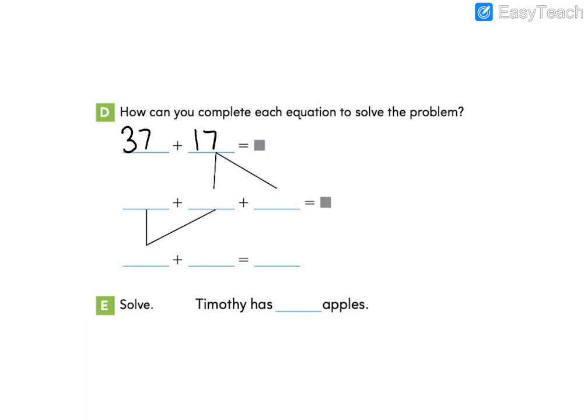So then we'll complete our equation. 37 plus 17. In our drawing, we saw that we needed 3 more to get to the next tens place. Then we would have 4 tens or 40.